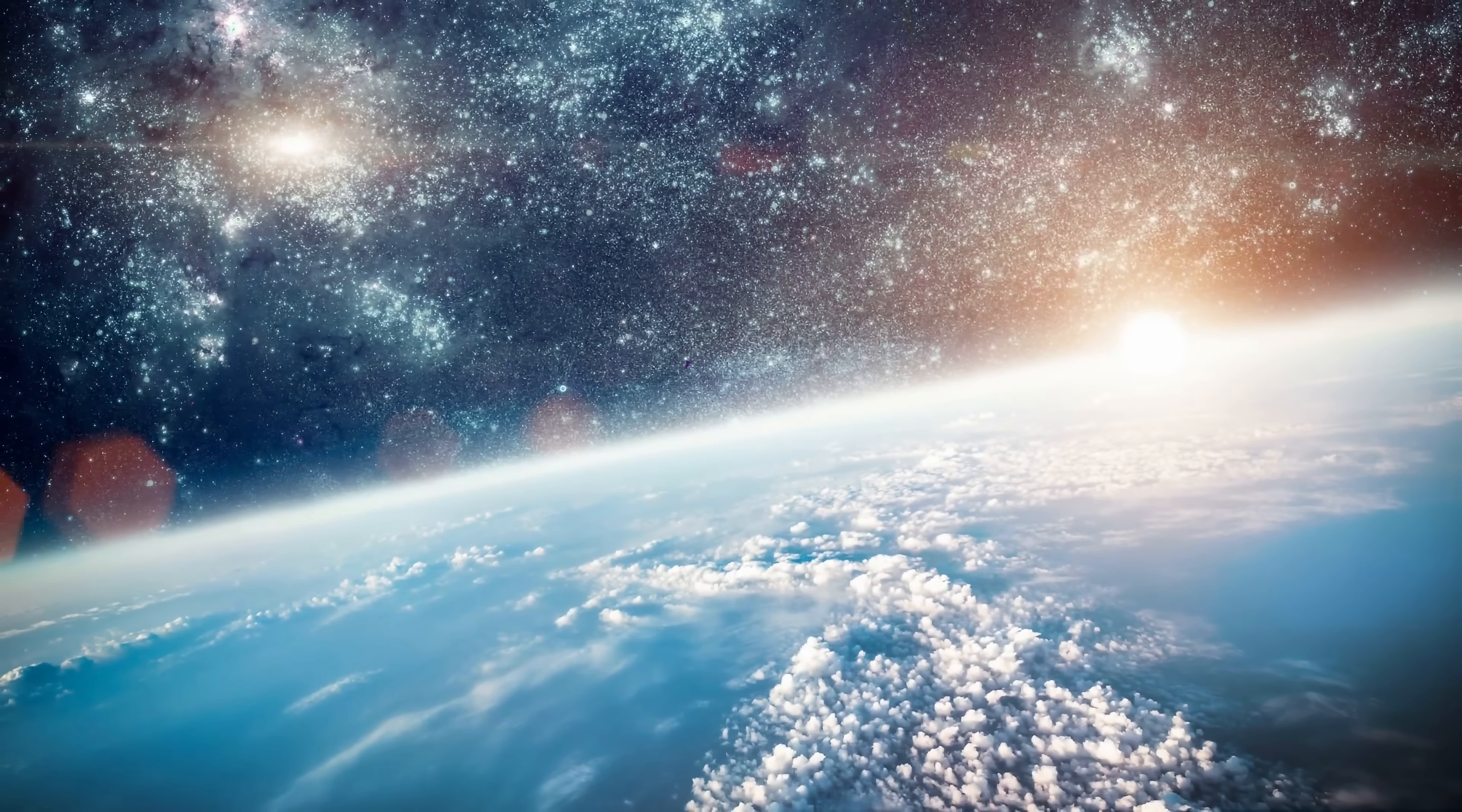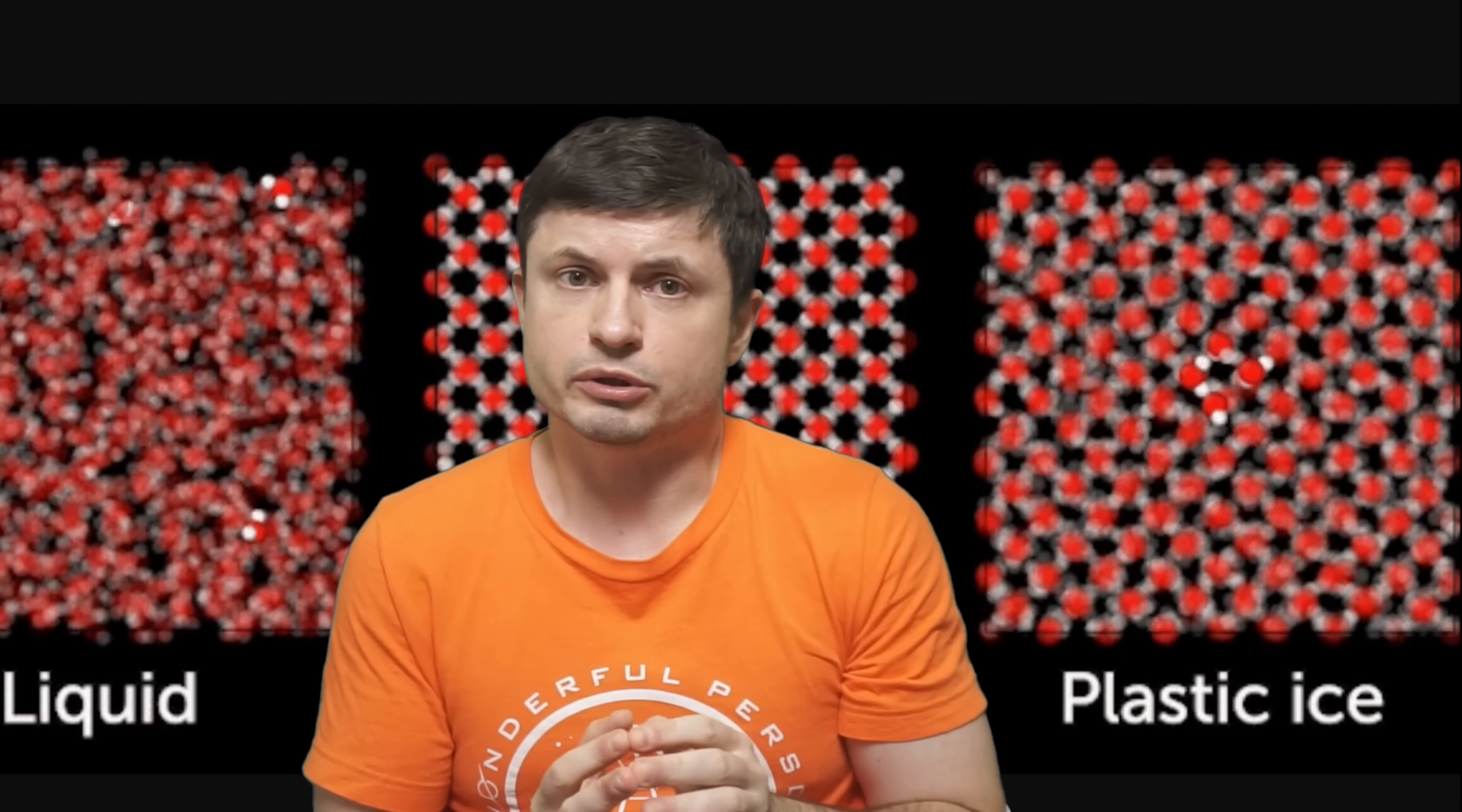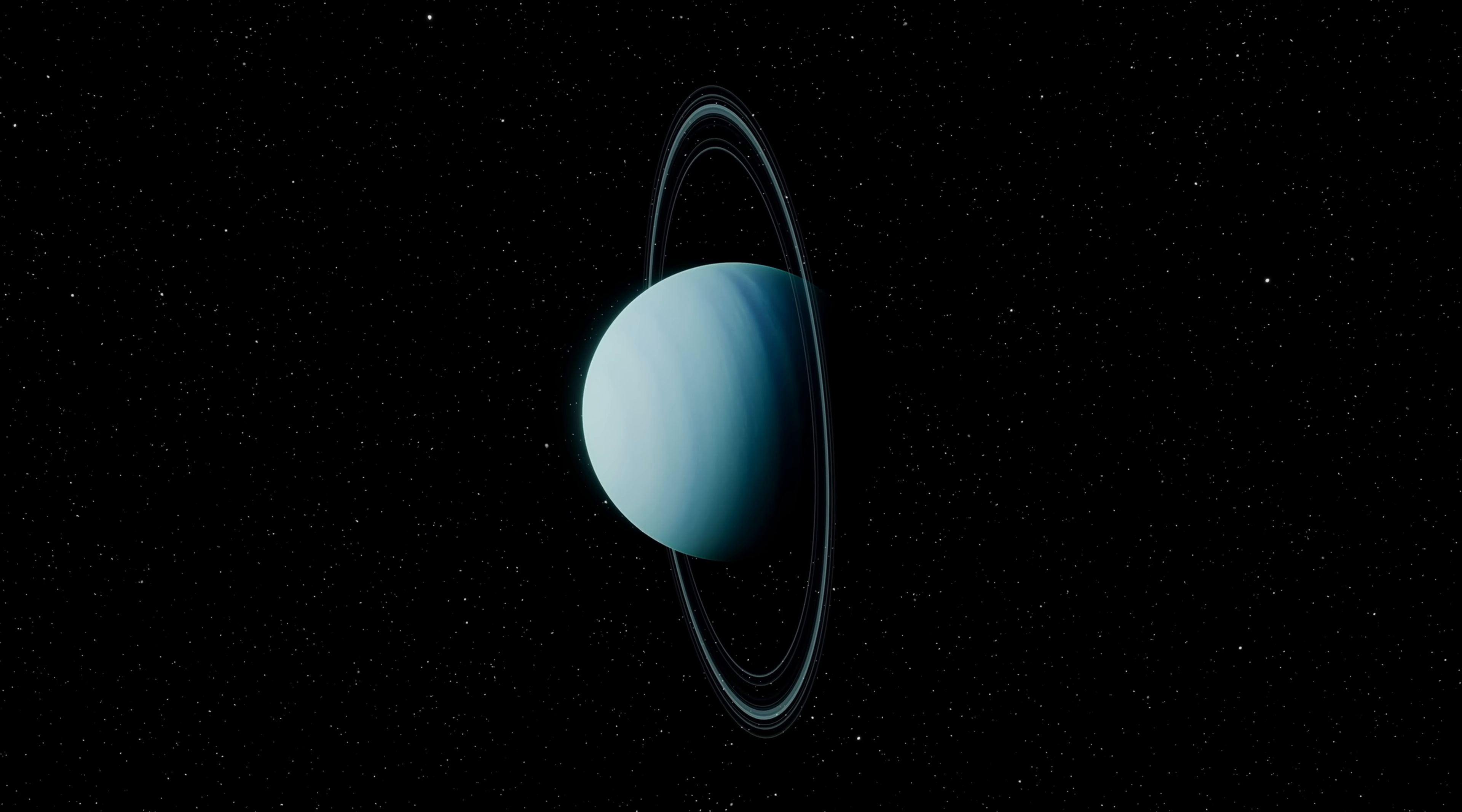But any large exoplanet with a lot of oceans and a lot of pressure is most likely going to have something similar. It's either going to have Ice 7 in its more stable crystalline form, or potentially this bizarre plastic ice. Allowing any large planet to be very malleable, maybe even allowing it to change shapes. Especially if there is some kind of an object nearby causing tidal disruptions. Because here a plastic ice is very likely going to have different effects compared to crystalline ice.